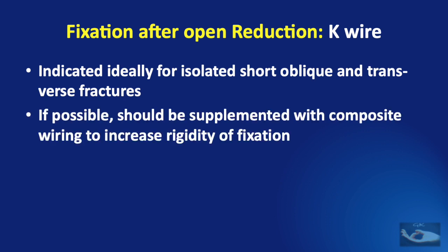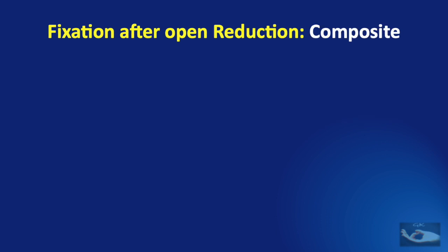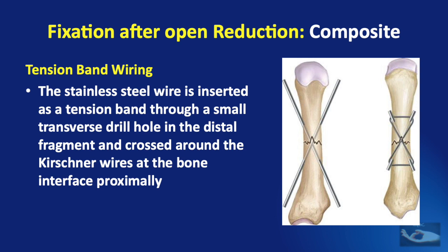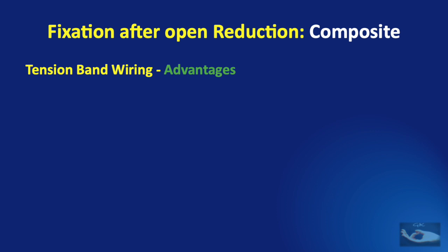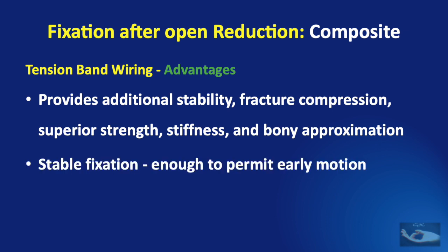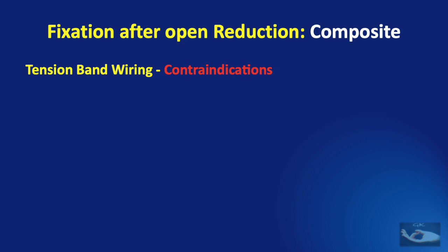The next method is composite fixation, otherwise known as tension band wiring. This combination uses K-wires and monofilament stainless steel wire. The stainless steel wire is inserted as a tension band through a small transverse drill hole in the distal fragment, crossed around the K-wires at the bone interface proximally. The advantages are additional stability, fracture compression, superior strength, stiffness, bony approximation, and — most importantly — stability sufficient to permit early motion. The contraindications are bone loss, comminution of the fracture, and osteopenia.